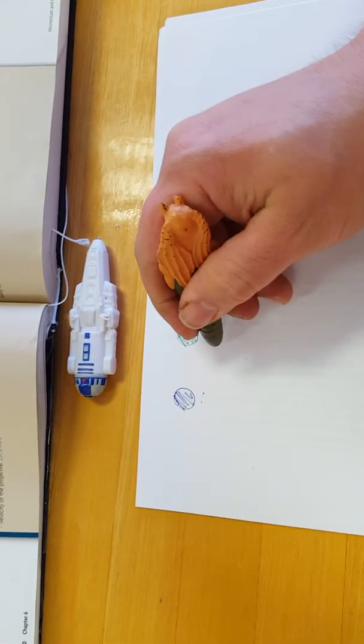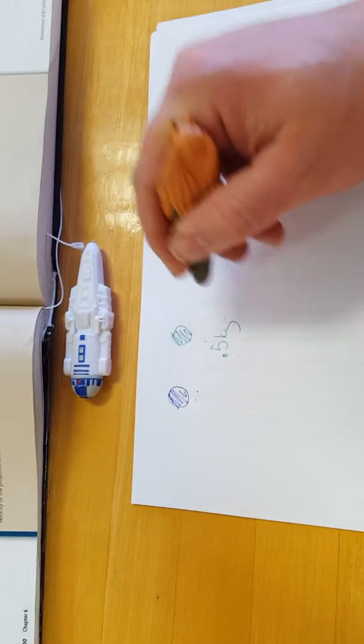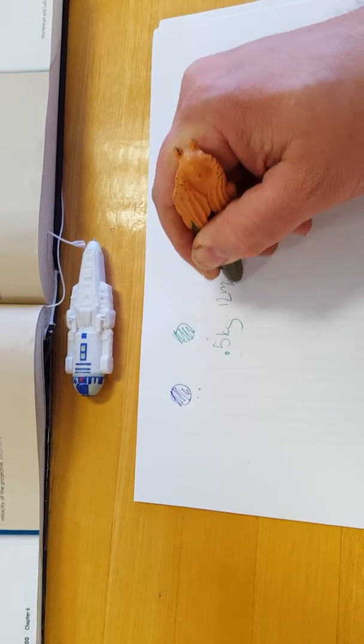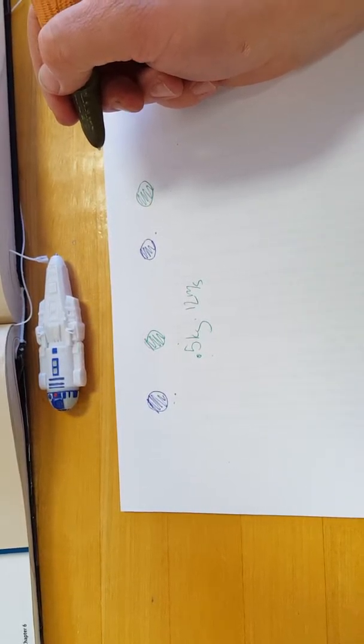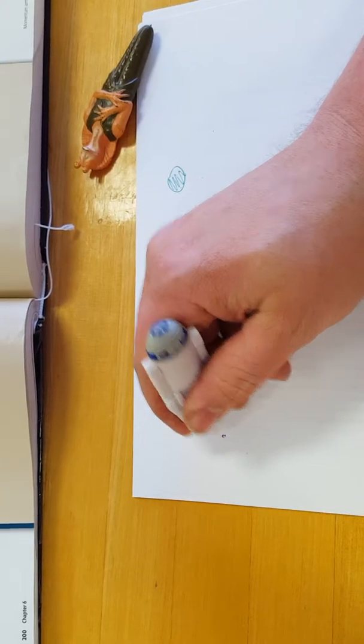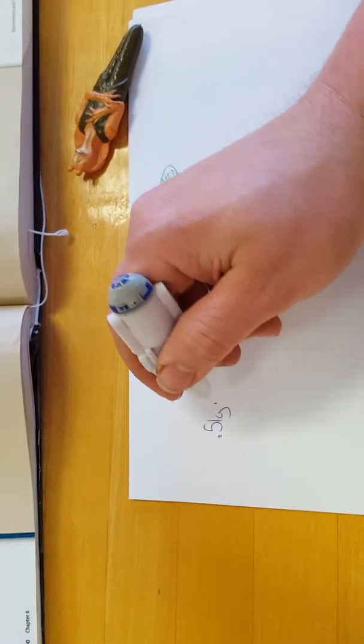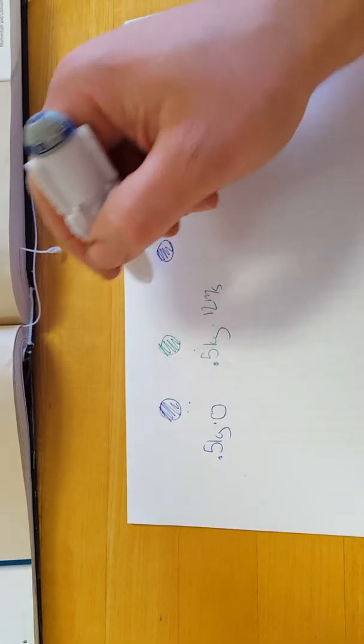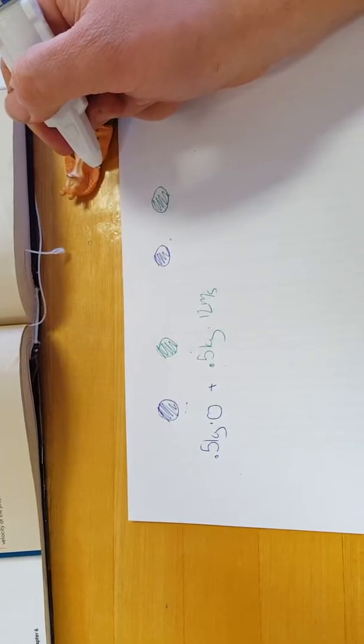Oops, green. It's traveling at, so 0.5 kilograms times 12 meters per second. The blue one also, 0.5 kilograms, 0.5 kilograms times at rest 0 meters per second. So we have the initial momentum present here from the problem.